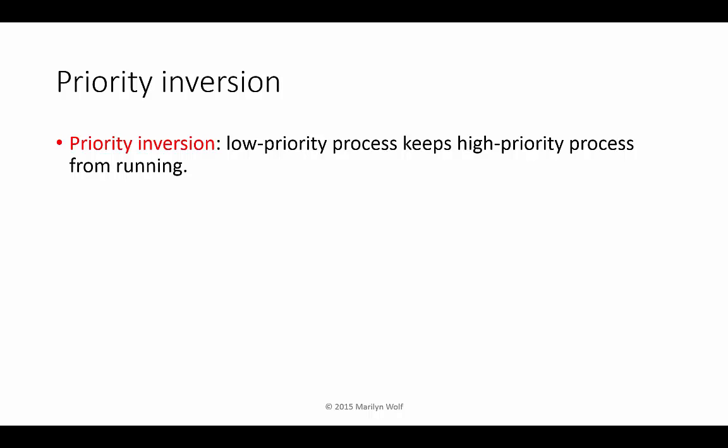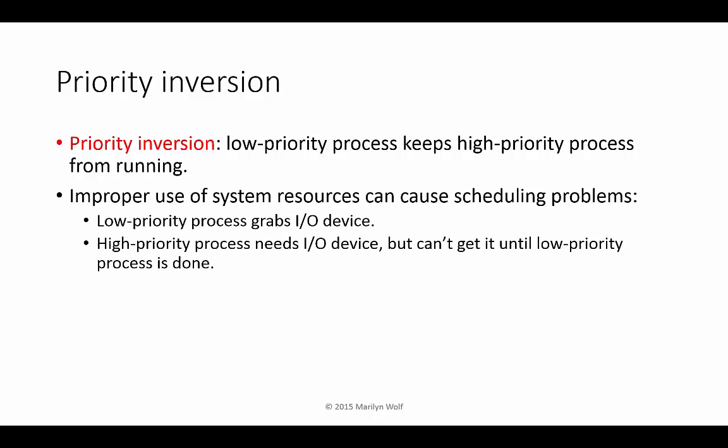At a higher level of abstraction, interactions between processes can cause priority inversion, in which a low-priority process keeps a high-priority process from running. This happens when they share a resource such as an I/O device. The low-priority process grabs the device and starts operating on it. When a high-priority process needs the same device, it can't get it until the low-priority process releases it — but the low-priority process can't execute because it's been preempted by the high-priority process. The result, in some cases, is deadlock.